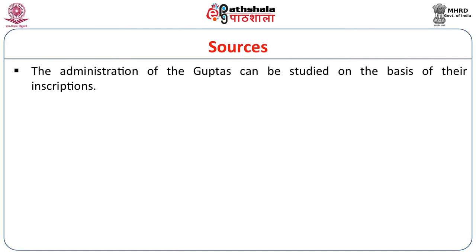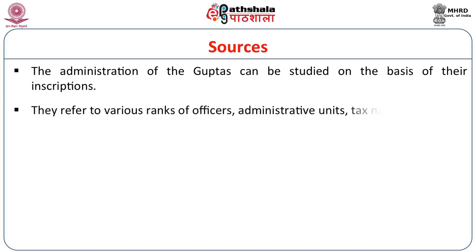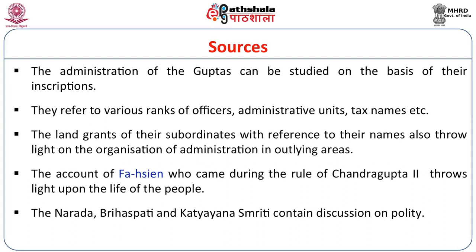The sources for study of Gupta administration include their inscriptions, which refer to various ranks of officers, administrative units, and tax names. Land grants of their subordinates — sometimes naming and sometimes not naming the Gupta overlords — were all dated in the Gupta era. We think these were issued by subordinates who wanted to assume more authority and so did not always name their Gupta overlord, but still used the Gupta era in their inscriptions.